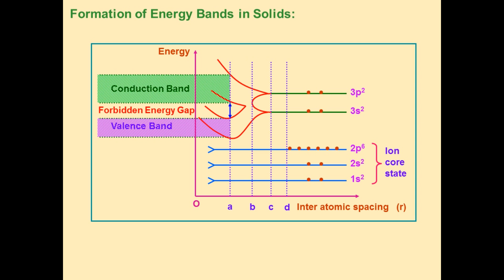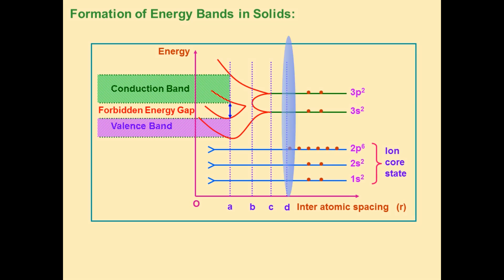This is the graph, and in the graph I have highlighted the part at point D. When r equals infinity, that means the interatomic distance is very, very high — there is no influence of the energy levels of one atom on the energy levels of other atoms. For an isolated atom, energy levels are discrete.